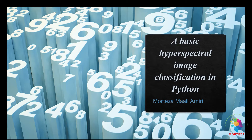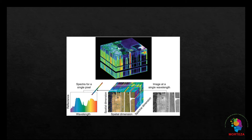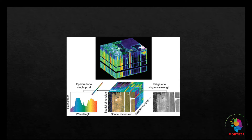Let's first touch on some concepts. Hyperspectral imaging measures the spatial and spectral characteristics of an object by imaging it at different wavelengths. In a hyperspectral image, the intensity values recorded at each pixel specify the spectral characteristics of the region that the pixel belongs to. The region can be a homogeneous or heterogeneous surface. The pixels that belong to a homogeneous surface are known as pure pixels, and these pure pixels constitute the end-members of the hyperspectral data.